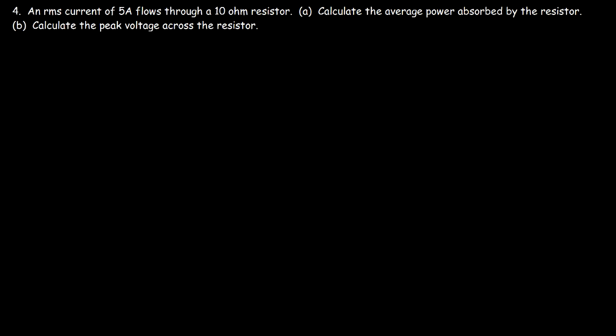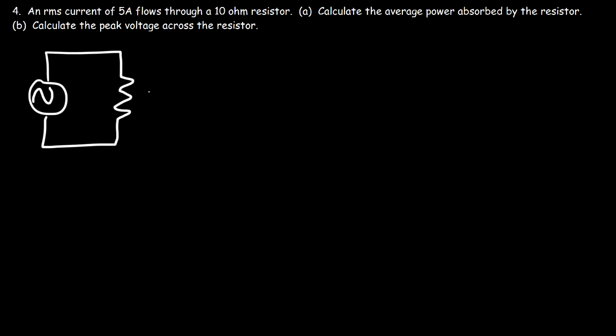Problem 4 — the last problem of the video: An RMS current of 5 amps flows through a 10-ohm resistor. Calculate the average power absorbed by the resistor. Drawing the circuit, we have an AC power source connected to a 10-ohm resistor.